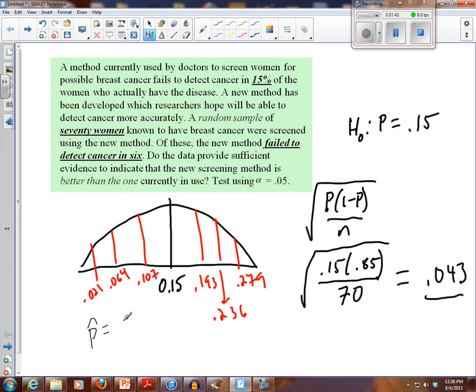was six failed cancers or undetected cancers divided by 70, which is about 0.086.